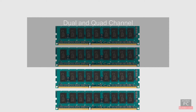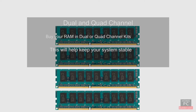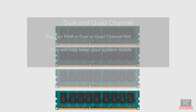One more thing about dual and quad-channel memory: to make sure the RAM sticks are well-matched to each other, it's best to buy kits of RAM that say they support dual or quad-channel configurations. This will ensure the RAM is stable and won't cause errors or crashes.